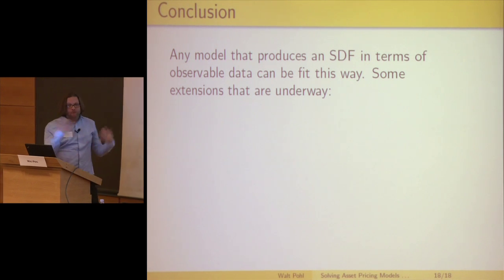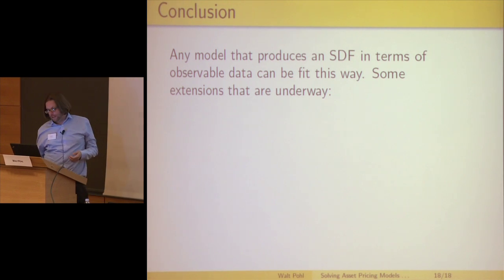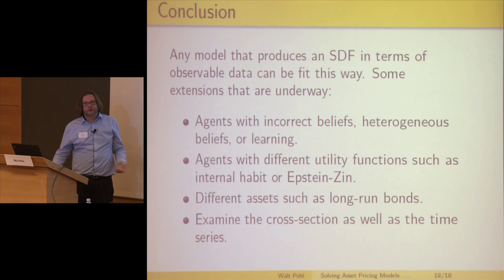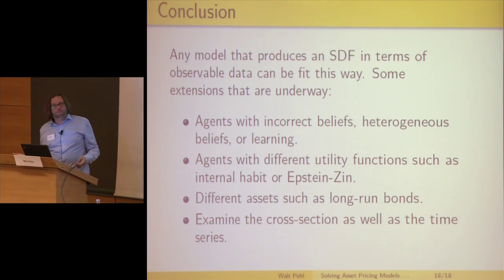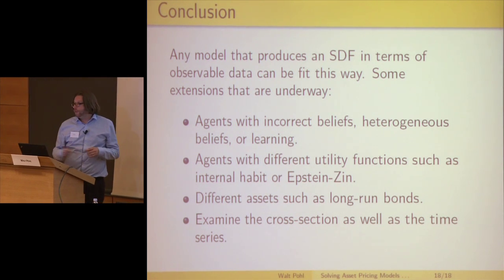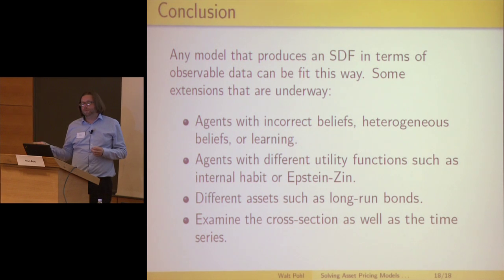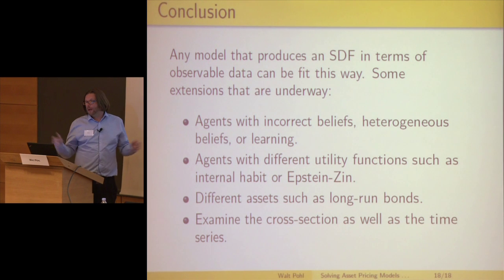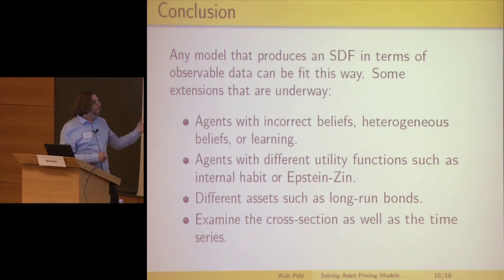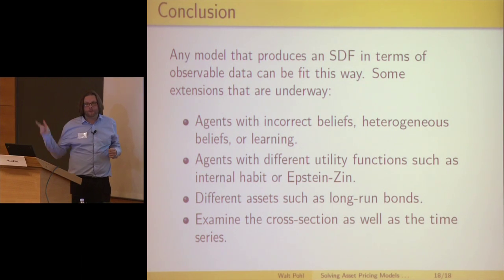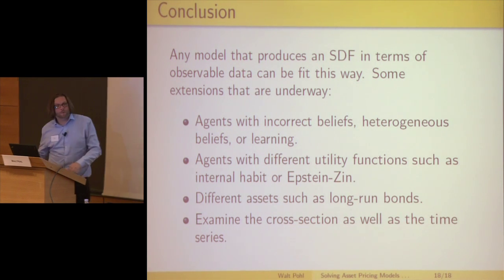Some extensions I have in mind: I can fit lots of models here. Things that would work include agents with incorrect beliefs — a representative agent with incorrect beliefs — or heterogeneous beliefs with multiple agents, or learning. In all these cases you can explicitly write down a stochastic discount factor so it's tractable. Other things to try include different utility functions like internal habit — which doesn't particularly help compared to CRA — or Epstein-Zinn. I'm also looking at other assets such as long-run bonds, and thinking about ways to look at the cross-section rather than just one single dividend series, since there are clearly more dividend series we can extract from the cross-section.